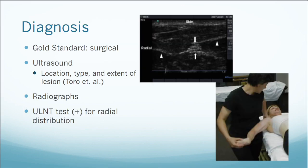As far as diagnosing this condition, the gold standard is exploratory surgery. Radiographs can also be used to detect or rule out fractures, tumors, or healing calluses that may be causing compression of the nerve. Recent studies have found that ultrasound can also be used to find the location, type, and extent of the lesion, which is more cost-efficient than radiographs. Most patients will also have an adverse neural tension test positive in the radial distribution if they have radial nerve entrapment.